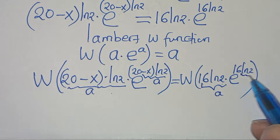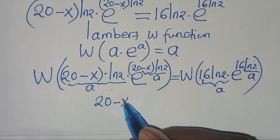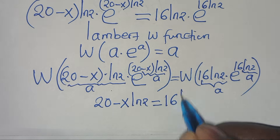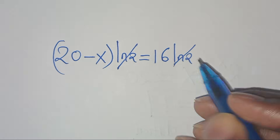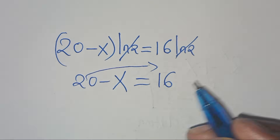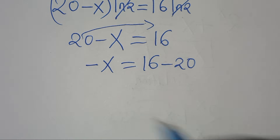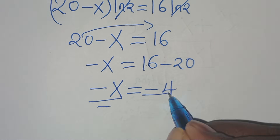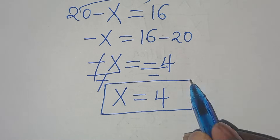Applying the Lambert W function, the left hand side simplifies to (20 minus x) times ln(2), and the right hand side simplifies to 16 times ln(2). Since ln(2) appears on both sides it cancels, giving us 20 minus x equals 16. Taking 20 to the right: minus x equals 16 minus 20, which is minus 4, so x equals 4.